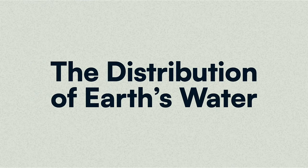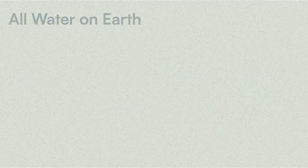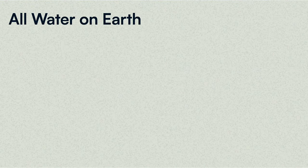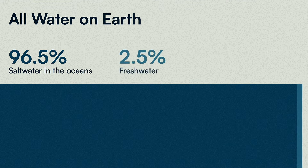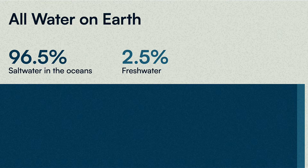Let's take a look at the distribution of Earth's water, beginning with everything — all of the water that exists on Earth. Of that 100%, a staggering 96.5% exists as saltwater in our oceans. Only 2.5% of all the water on Earth is freshwater, and the remaining 1% is other salty water that exists in estuaries and other brackish bodies of water.